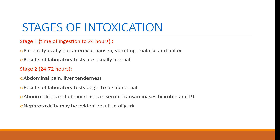Stage 2 — from 24 to 72 hours: The patient has abdominal pain and liver tenderness, and laboratory test results begin to be abnormal, including increased serum transaminases, increased bilirubin, and increased prothrombin time. We also see nephrotoxicity, which may result in oliguria.